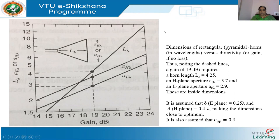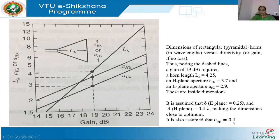The aperture efficiency assumed is 0.6, defined as the effective aperture divided by the physical aperture. We have finished the rectangular horn antennas. The remaining two portions are the Yagi-Uda array and parabolic reflectors, covered in sections 8.8 and 9.5.